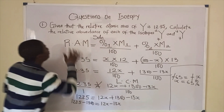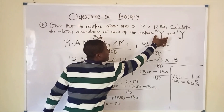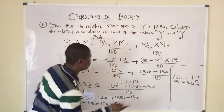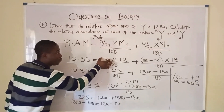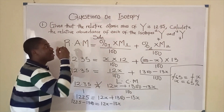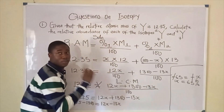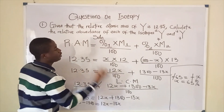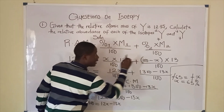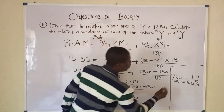The relative abundance of the first isotope, Y-12, equals 65%. To find the relative abundance of the second isotope, Y-13, we use 100 minus X.